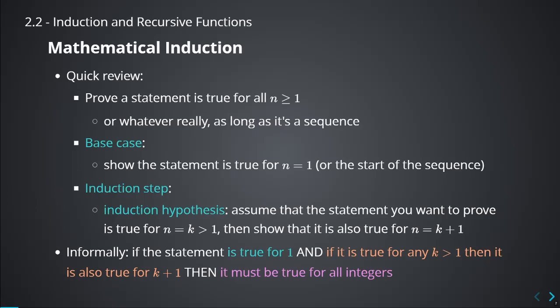You can't use induction on real numbers, because that's not really a sequence. In a proof by induction, you first have the base case — you show that the statement is true for n equal to 1, or n equal to 0, or whatever the starting point of the sequence is. Then you have the induction step, where you assume that the statement is true. We call this the induction hypothesis — you assume the statement is true for some value k, where k is greater than the starting point.